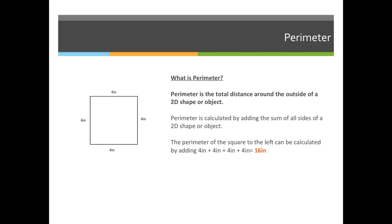What is the perimeter of the square on your screen? Perimeter is the total distance around the outside of a 2D shape or object. So in order to calculate the perimeter of this shape, we must add up all the sides, and because it's a square, they're all 4 inches. 4, 4, 4, and 4 means the perimeter is 16 inches.